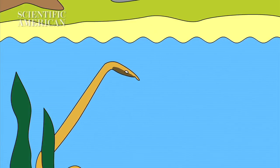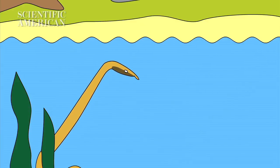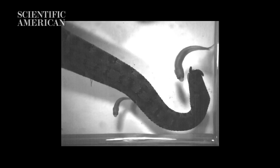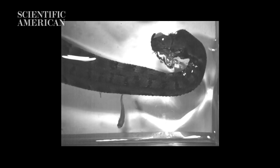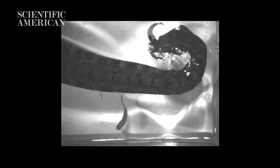It happens so quickly that it's impossible to capture with regular film. But when viewed at 2,000 frames per second, about 100 times the speed of standard film, the snake's strategy becomes clear.